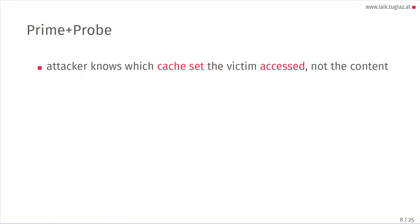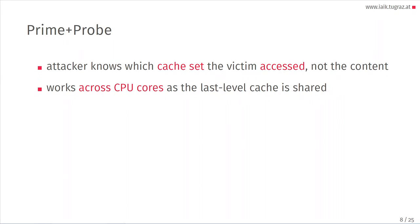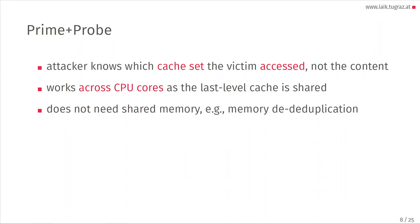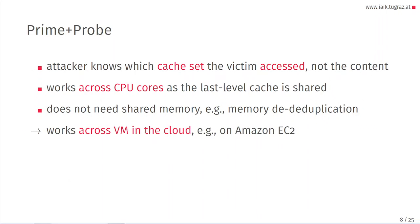I will talk about the technique called Prime and Probe. It's a cache attack technique in which the attacker knows which cache set the victim accessed, but not the contents. It can be used both for covert channels and side channel attacks. It works across CPU cores because it targets the last level cache that is shared across all cores. Importantly, it does not need any shared memory, so you don't need memory deduplication, meaning it will work across virtual machines in the cloud — for example, on Amazon EC2.